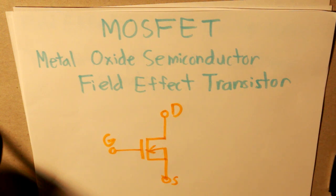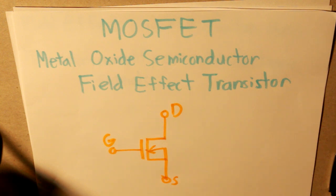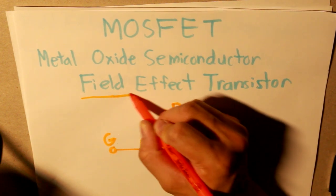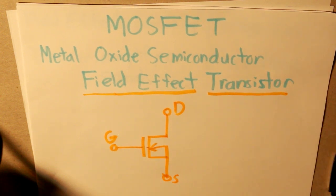And there are two important terms that you must know, and it's right in front of our faces. The metal oxide semiconductor field effect transistor. So the two terms we have to emphasize are the field effect and the transistor. And that's what basically a MOSFET is.